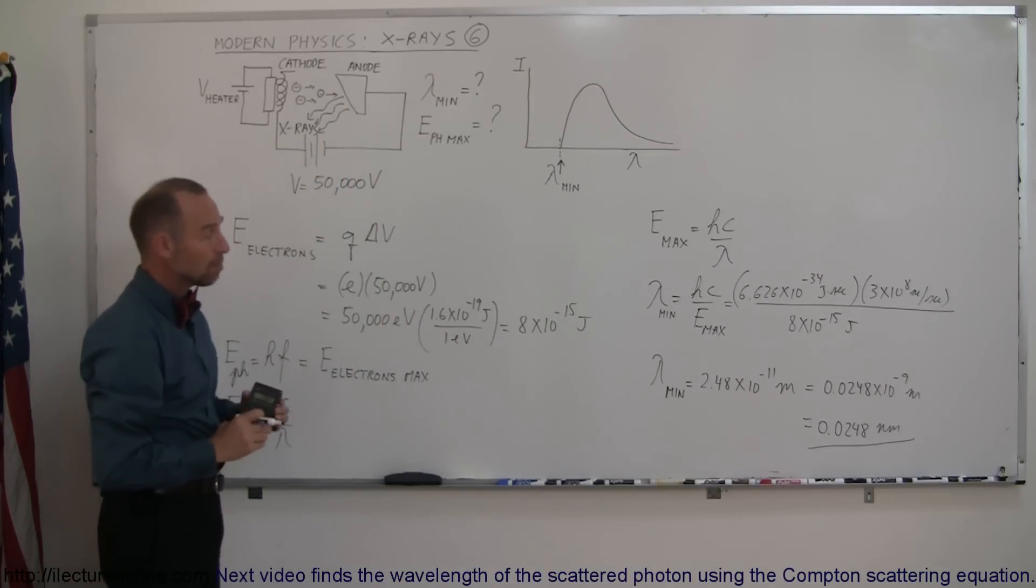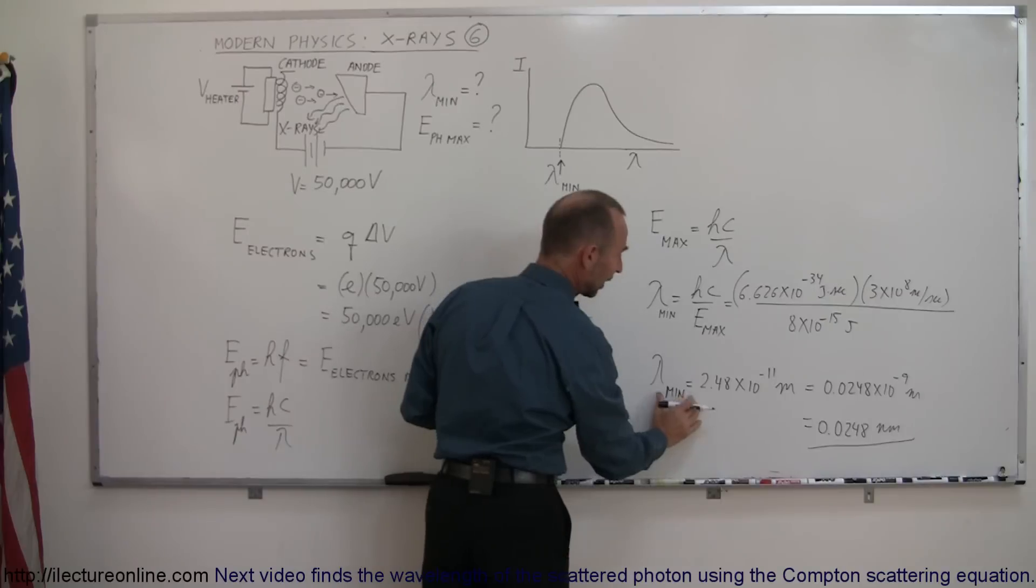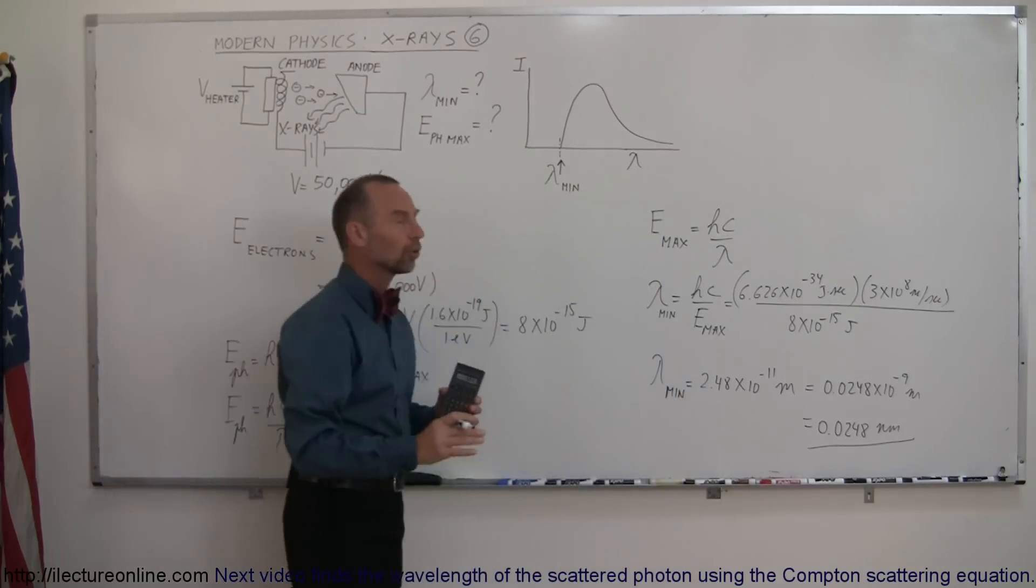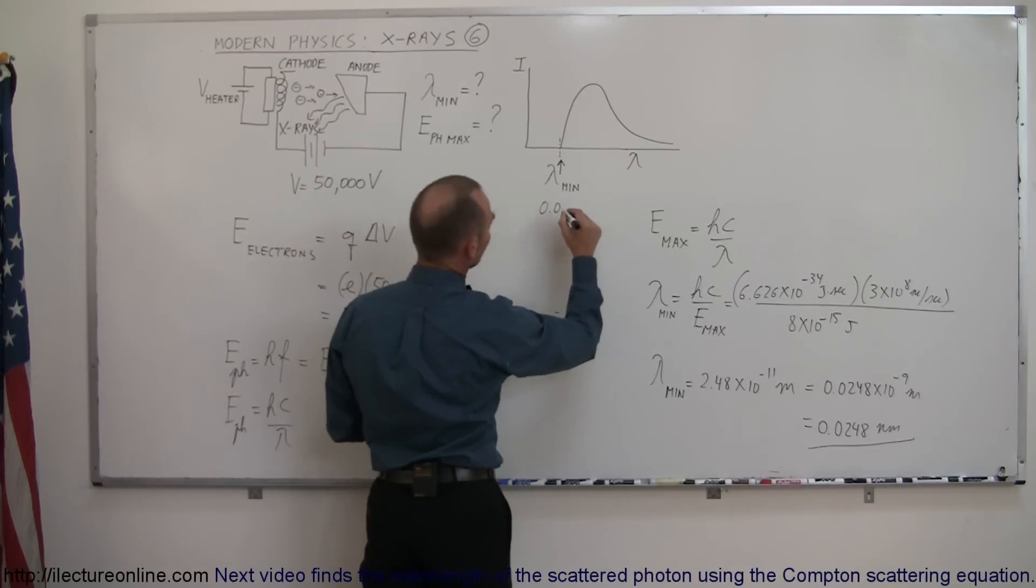And the most powerful radiation can then be obtained by having the minimum wavelength, which is equal to this. Of course there's a general distribution. So in this case this is 0.0248 nanometers.